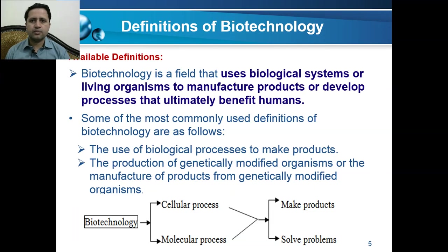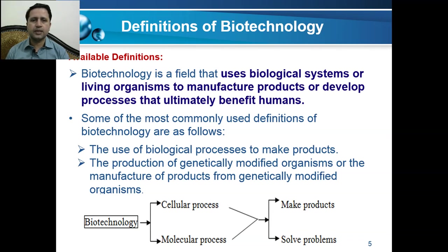Here are some definitions of biotechnology. One definition is: the field that uses biological systems or living organisms to manufacture products or develop processes that ultimately benefit human beings. Other definitions include: the use of biological processes to make different products, and the production of genetically modified organisms or the manufacture of products from genetically modified organisms. All of these definitions are true.